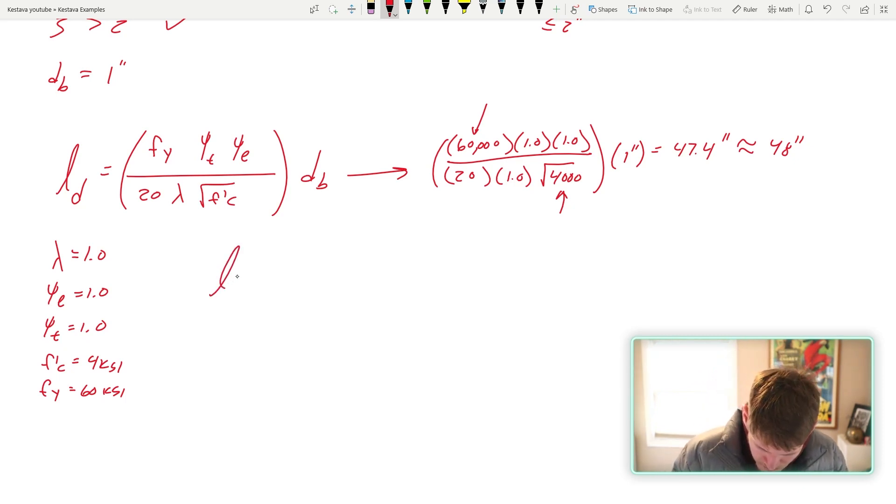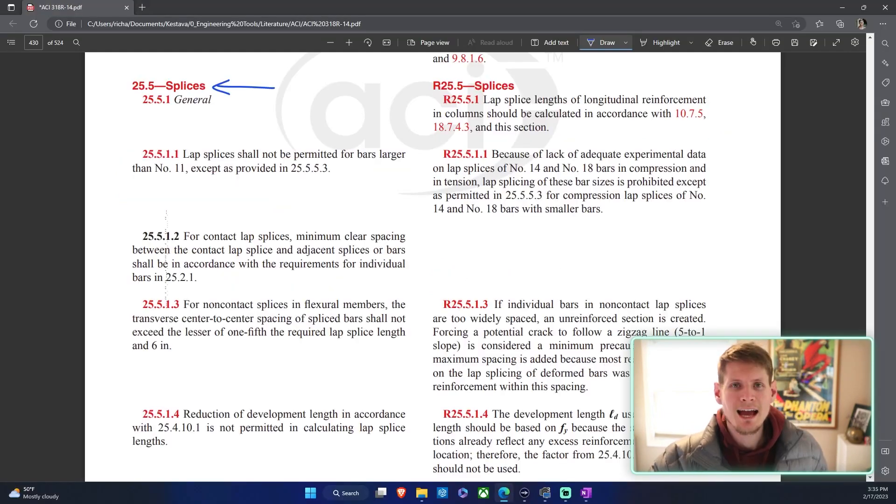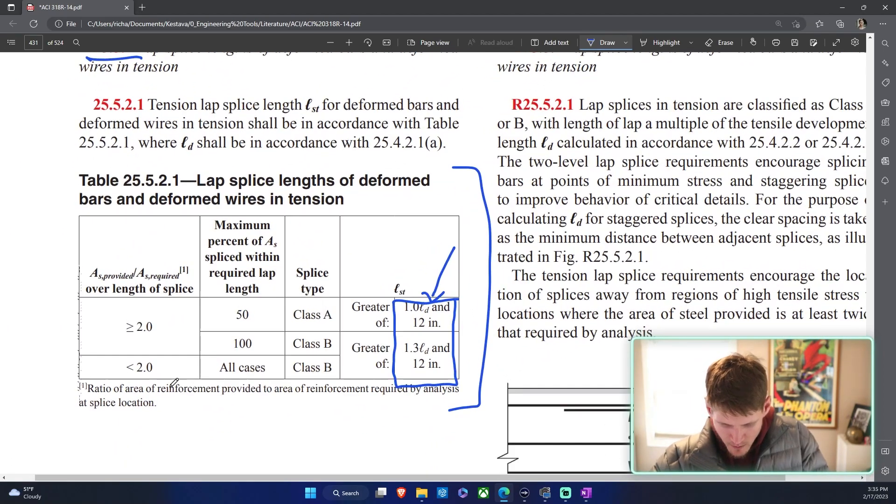But now that we have l sub d, now we need to go about and find l sub st. And that is per ACI 25.5.2, so let's head over there and check that back out.